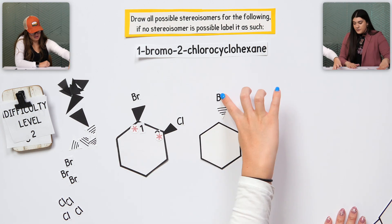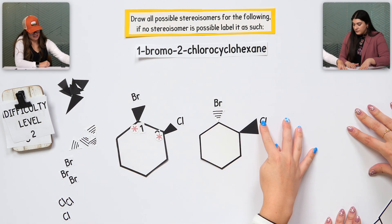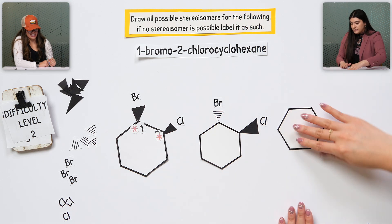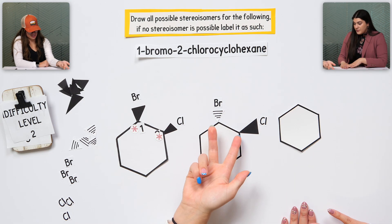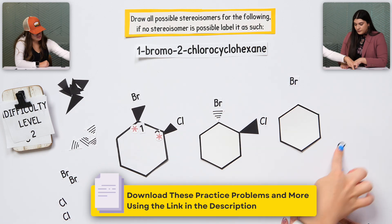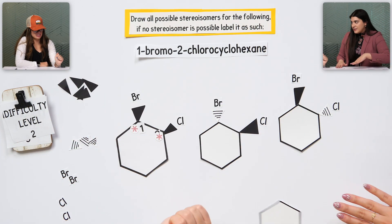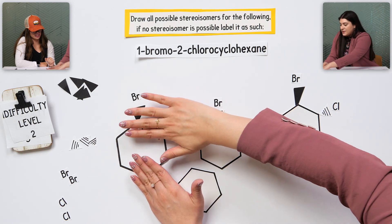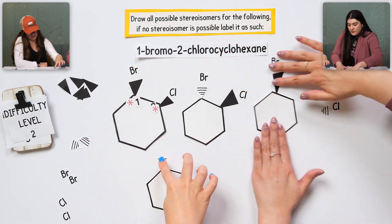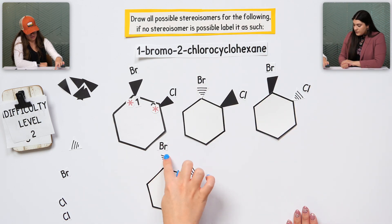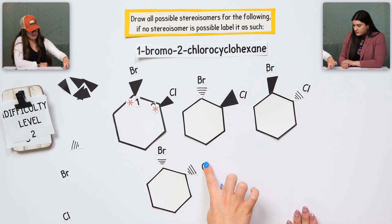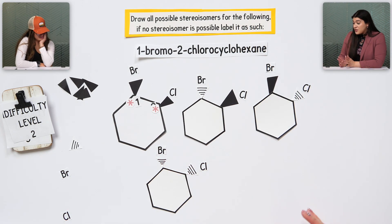And then I can do another wedged and dashed, just, like, switching. Yes. Okay. And then, last but not least, we could do dashed, dashed. Let me scooch this guy up. Yes. Good. Like that? That's it. Those are all the possibilities. This one is just flipping. Okay, great.